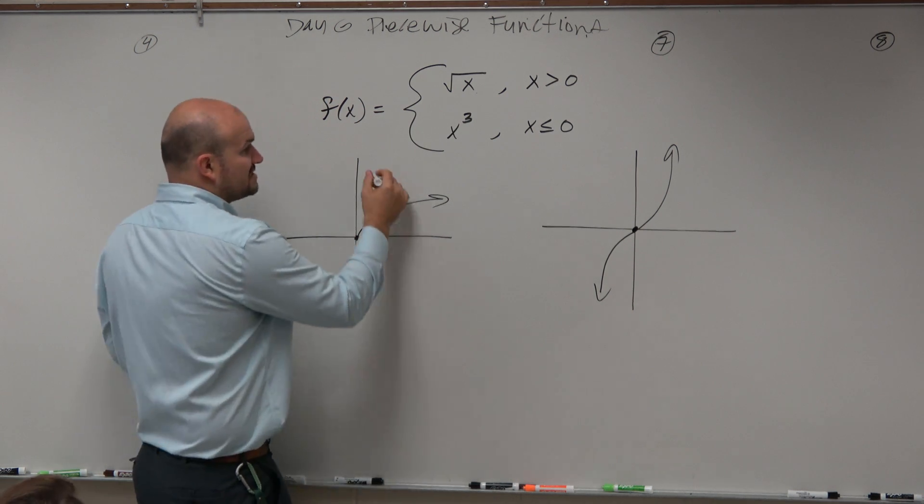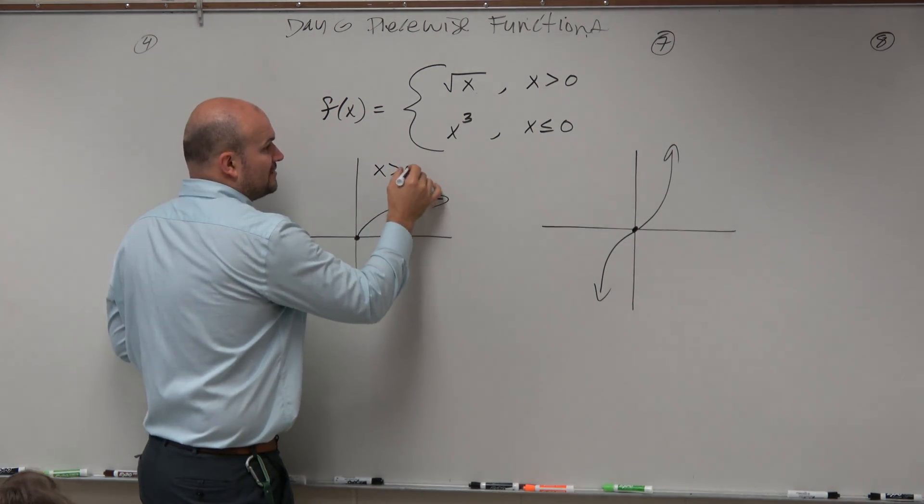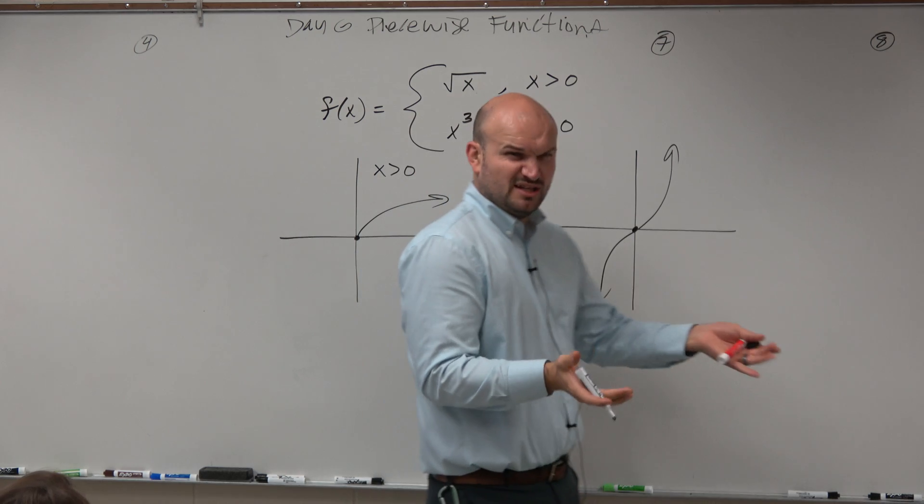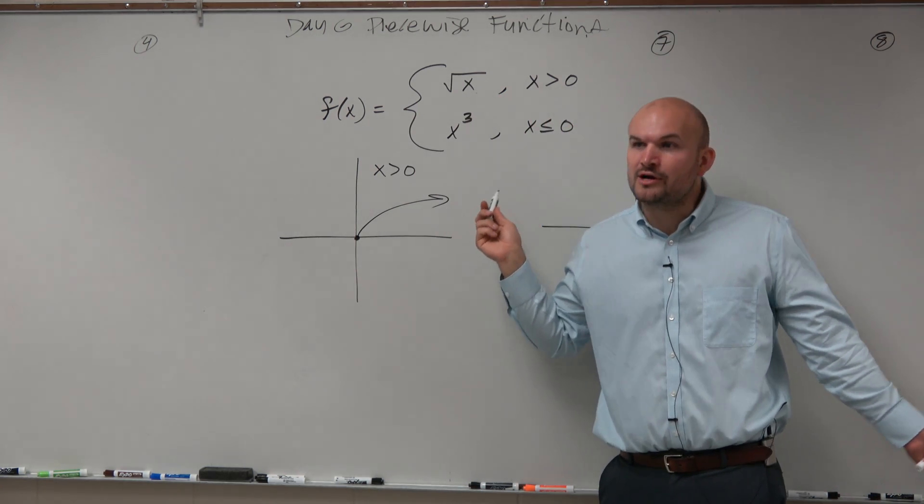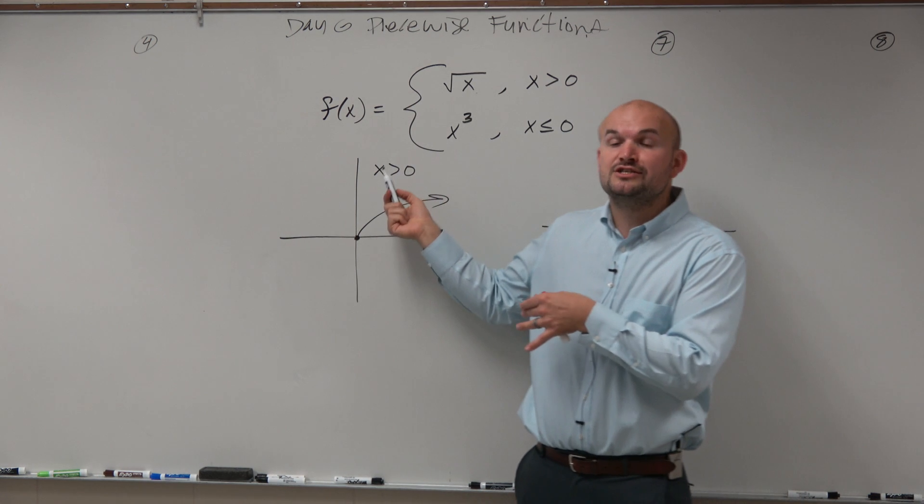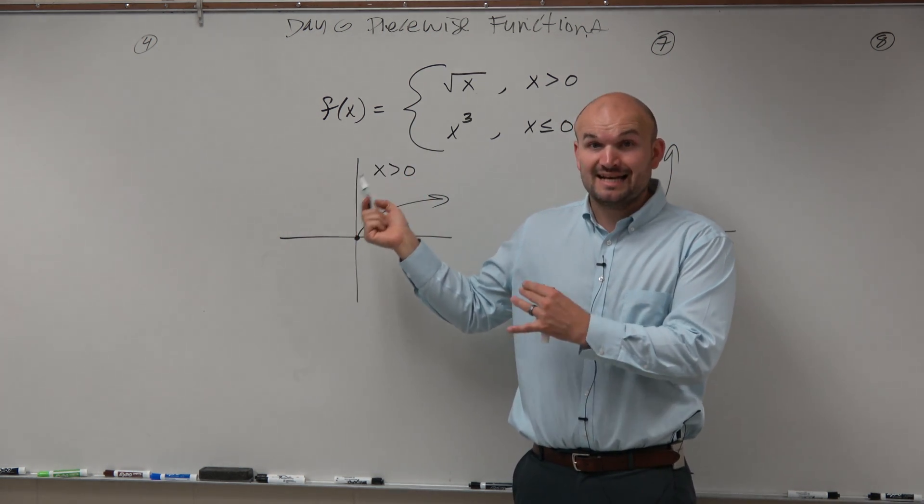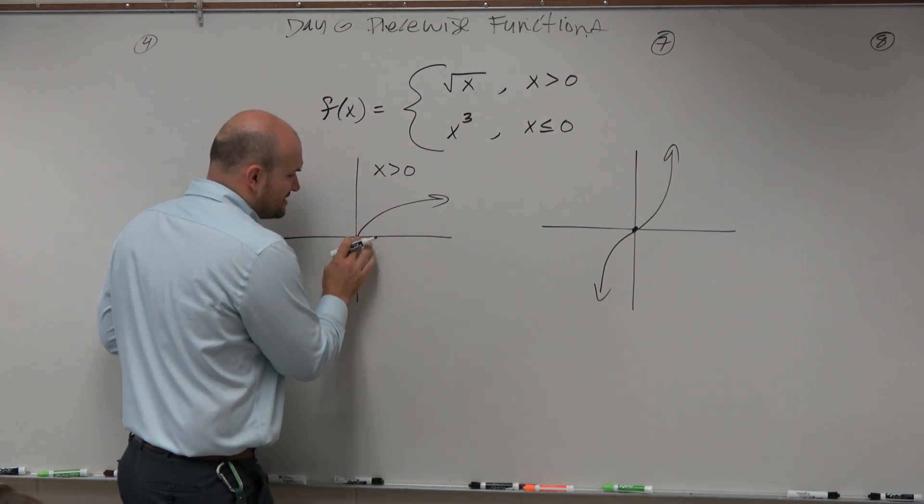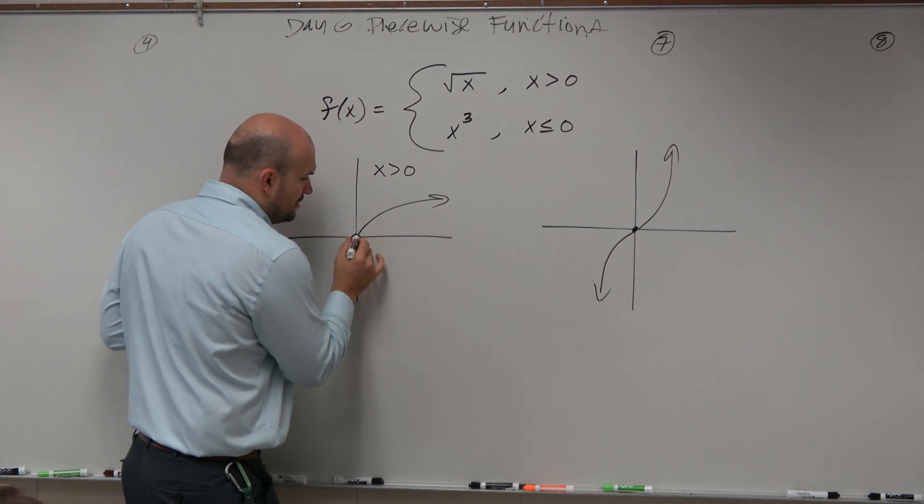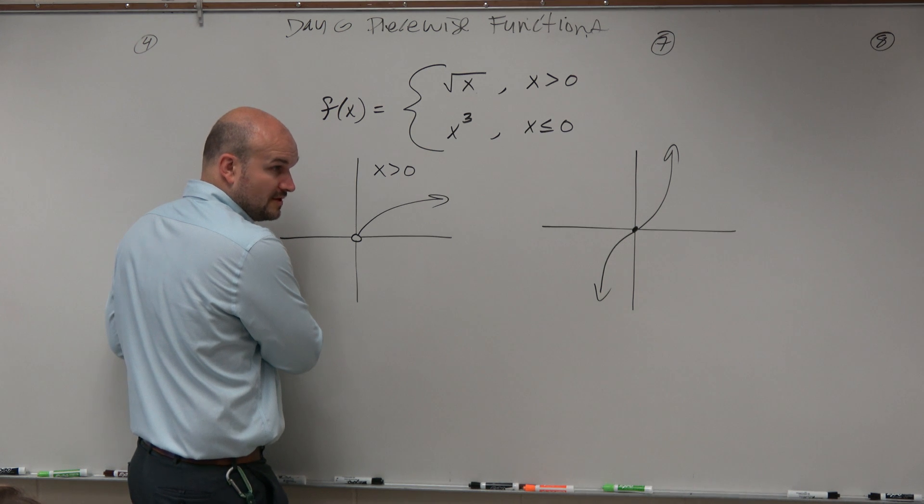Now, what's nice about this is this is restricted from x is greater than 0. So we look at it and say, all right, well, that's actually not too bad because the square root of x is all the numbers that are greater than 0 anyways. However, it says x is greater than 0, x cannot equal 0, right? 0 is not included. So we need to represent 0 not being included by using an open circle.